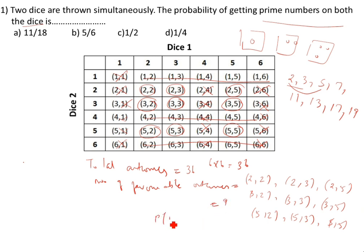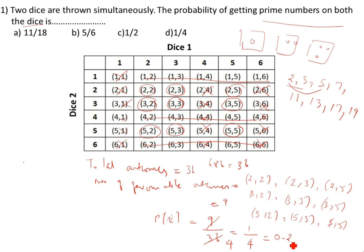So P(E) is equal to number of favorable outcomes divided by total outcomes, which is 9 by 36. Since 1 nine is 9 and 4 nines are 36, this simplifies to 1 by 4, which equals 0.25. So P(E) is equal to 0.25 is the answer.